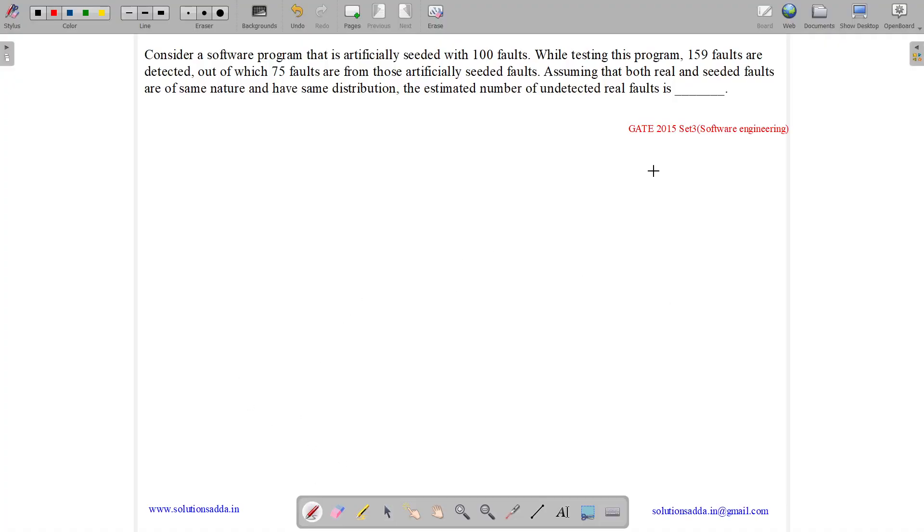This question belongs to software engineering subject and was asked in GATE CSE 2015 set 3. The question states: consider a software program that is artificially seeded with 100 faults. So we have a software program which is seeded with 100 faults.